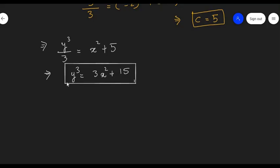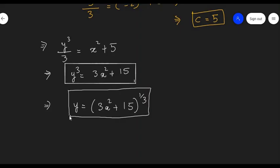We can also take cube root on both sides and get the equation in terms of y. So we can write as y equals (3x squared plus 15) raised to 1/3. This is also the same curve, just written a little bit differently.